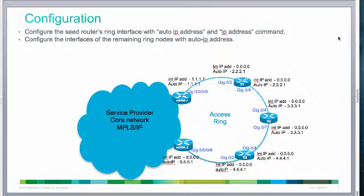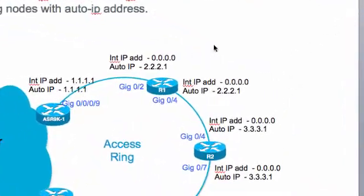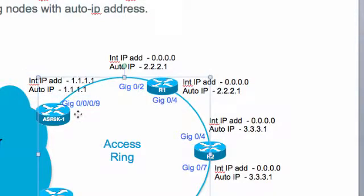This is the topology before the auto IP address assignment kicks off. At this instant, the interfaces are configured with auto IP addresses, and only on the seed router ASR9K1 has a working IP address configured — 1.1.1.x. You can see that the auto IP address and the working IP address are the same, confirming this is the seed router. It has the highest priority and will kick off the IP address assignment process in the ring.